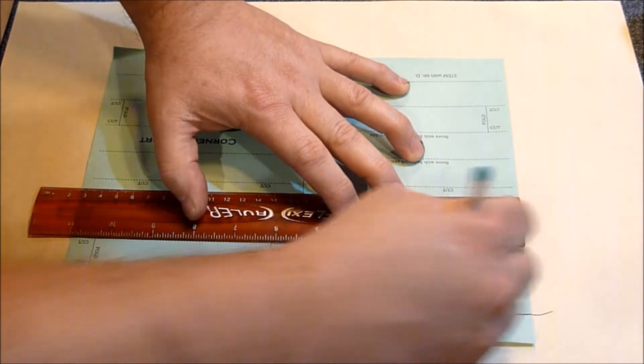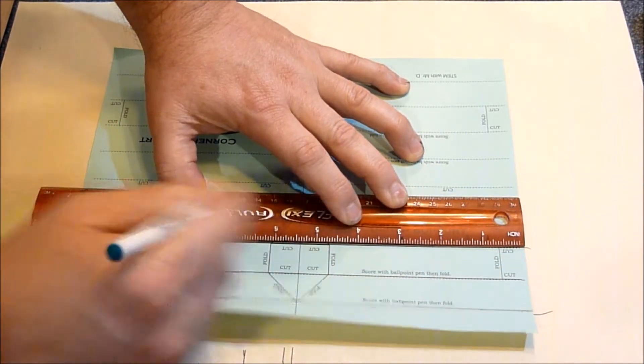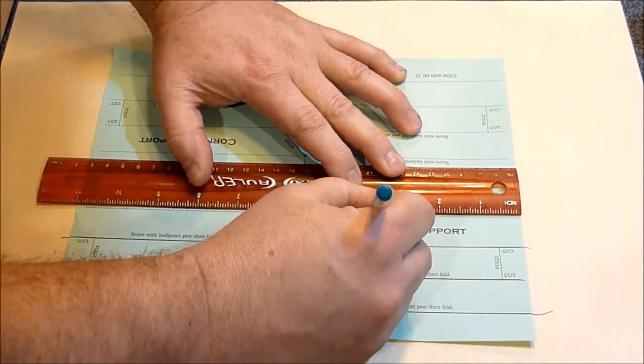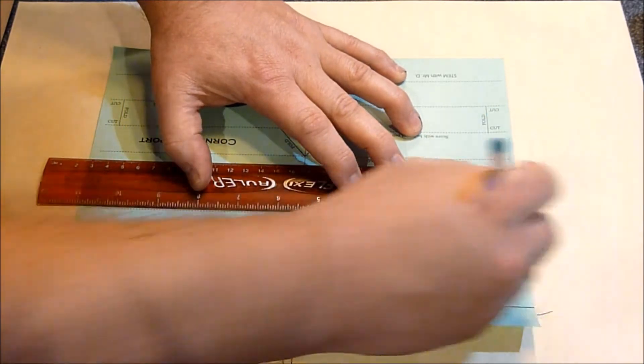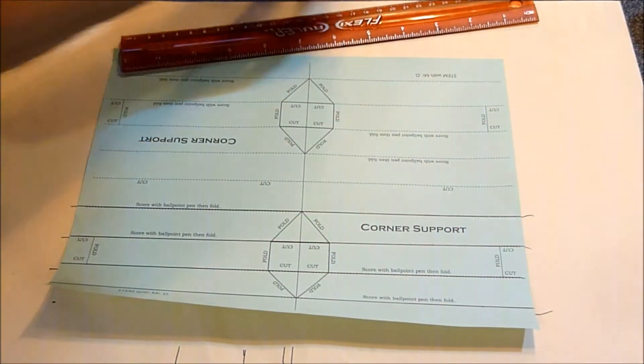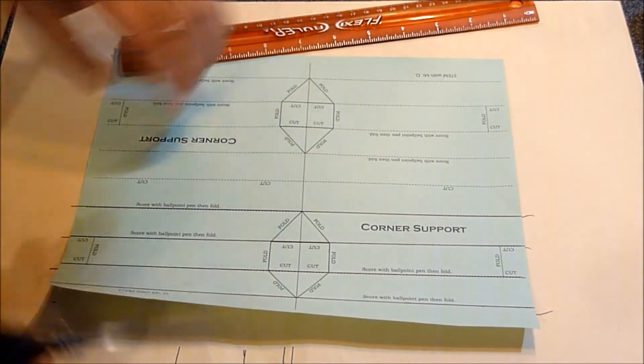Then you're going to cut it out, but each template makes four corner supports. So I'm going to stop there. You would do it all the way across.